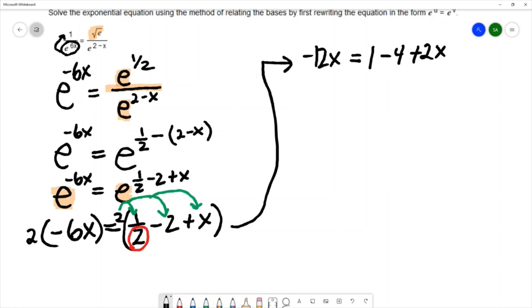I have negative 12x equals negative 3 plus 2x. I combined 1 and negative 4. I'm going to group the x's together so I'll subtract 2x on both sides. That's negative 14x equals negative 3, and I'll divide both sides by negative 14 to get the x by itself.